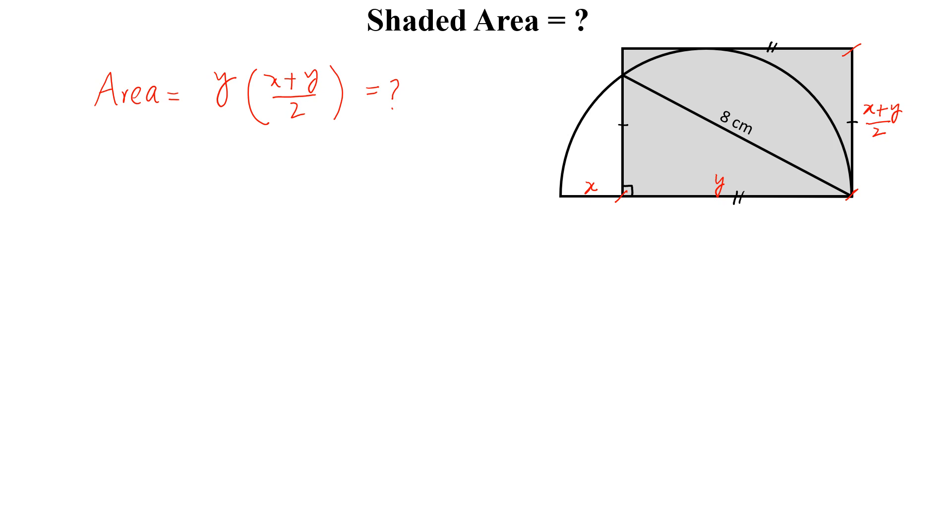Now if we extend this diagram, let this length is a and then this length will be also a. By intersecting chords theorem, we can write a into a, so a square equal to x into y and a is equal to square root of xy. So this length is square root of xy from here to here.